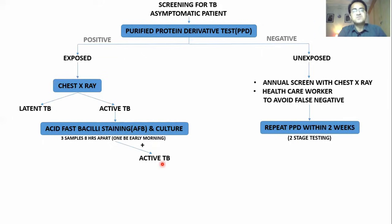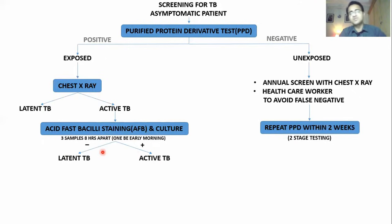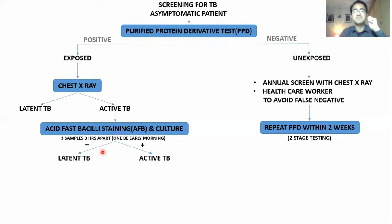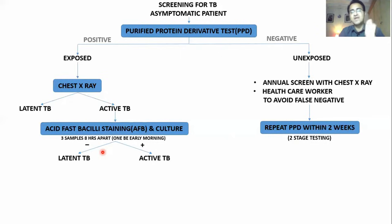If staining and culture is positive, it means the patient has active TB — this is a specific test. If it is negative, it means the patient has latent TB: they were exposed to tuberculosis in the past but are not actively having symptoms right now. However, there is a risk that this patient could convert from latent to active disease.